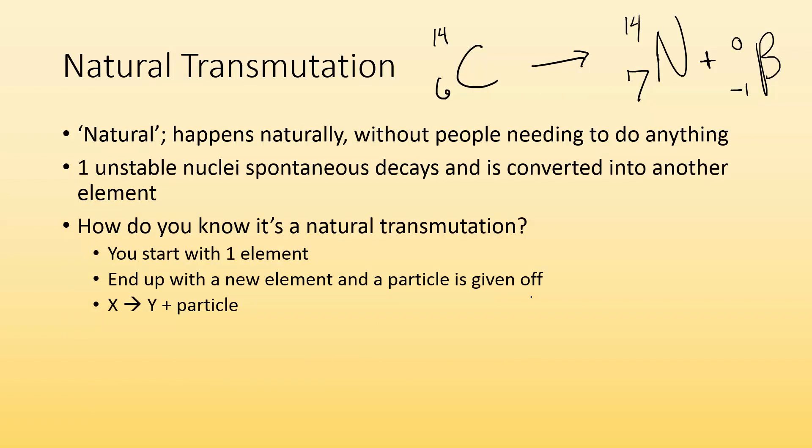Natural transmutation - natural means it happens naturally without people needing to do anything. One unstable nuclei spontaneously decays and is converted into another element. How do you know it's a natural transmutation? You start with one element, end up with a new element, and a particle is given off.